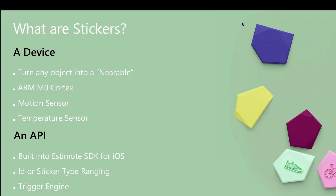The nearables API looks very much the same but returns different information. There is no UUID for specific nearables — nearables have an ID or a sticker type, and there's no major or minor number, so it's less information to worry about. The API enables you to range and monitor. Additionally, there's a trigger engine which enables you to subscribe to different types of rules you can create — proximity rules based on range, motion rules if you're moving or if the nearable sticker is moving, orientation rules, temperature rules, or date ranges.